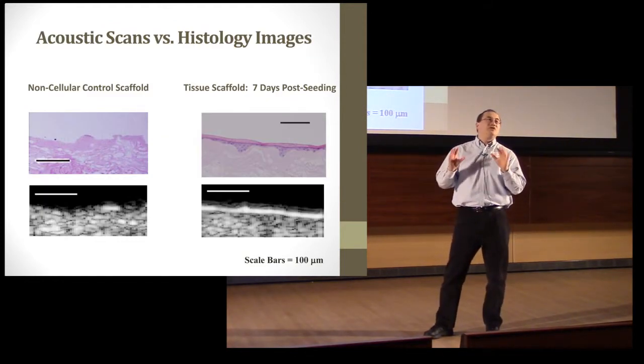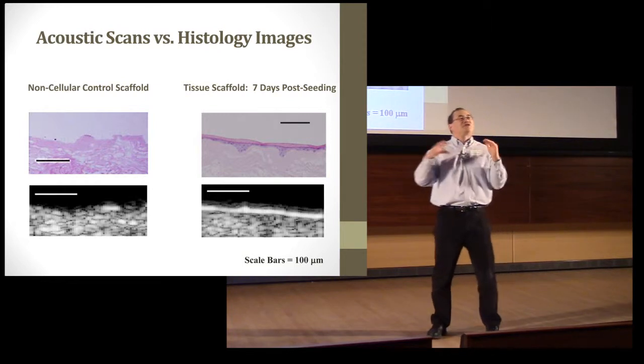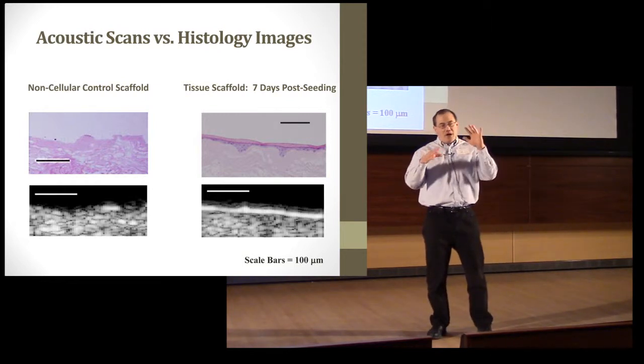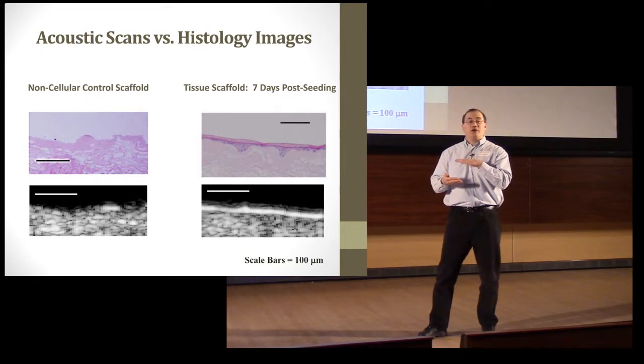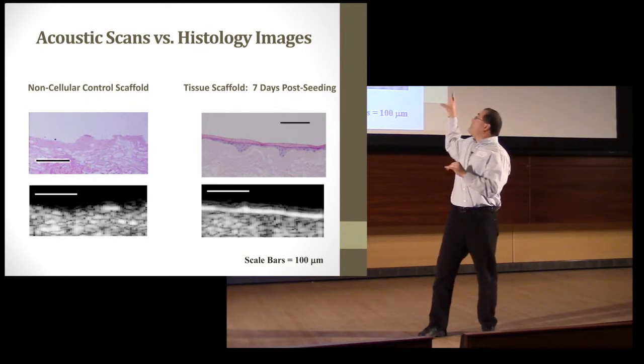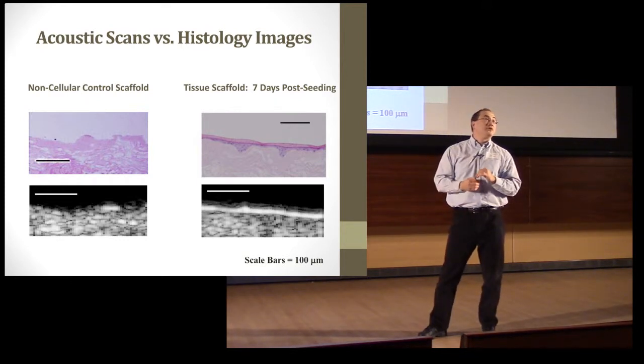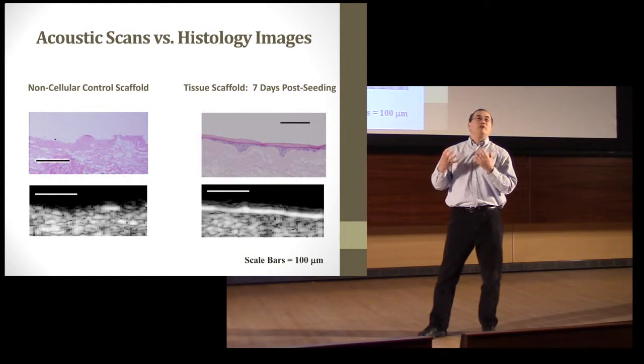What you're seeing here are two images. The top row are conventional histology images, one on the left is a non-cellularized scaffold, and on the right is a tissue scaffold that's fully mature. The acoustic counterparts are on the bottom, and you can see a dramatic difference between the non-cellular one and the tissue scaffold on the right side, a bright beam which indicates growth and development for those cells.